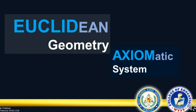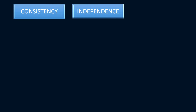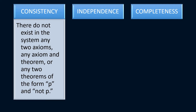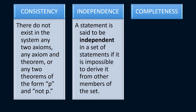The Euclidean geometry is an axiomatic system. And what makes an axiomatic system? We need to have three properties. The first one is consistency. The second one is independence. And the third one is completeness. Consistency means there do not exist in the system any two axioms, any axiom and theorem, or any two theorems of the form P and not P — that is, there are no existing statements that contradict each other. Independence simply means that each axiom must be independent from each other; you cannot use one to prove or derive the other.